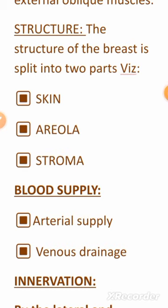The structure of the breast is divided into three parts: the skin, the stroma, and the areola. The skin contains the nipple, which is the most sensitive part — a conical projection approximately at the fourth intercostal space, below the fourth rib. The nipple contains smooth muscle fibers that make it stiff and allow it to erect.